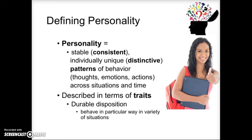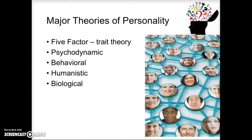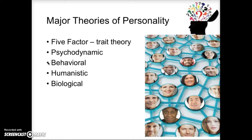Now that we have defined what personality is according to psychologists, we want to examine the major theories about personality. These theories are in two different groups. One group consists of theories we've already talked about in this class: the psychodynamic, the behavioral theories, the humanistic perspective, and the biological perspectives — all introduced in the evolution of psychology unit and discussed heavily in the chapter on the biological basis of behavior.